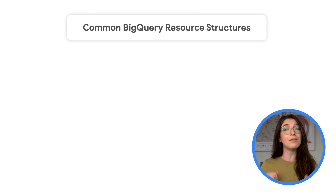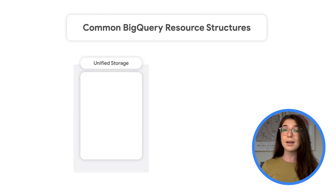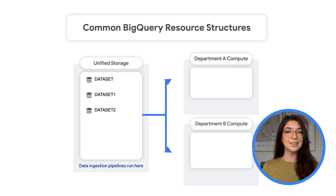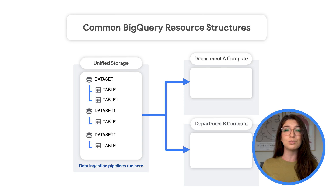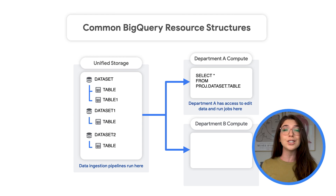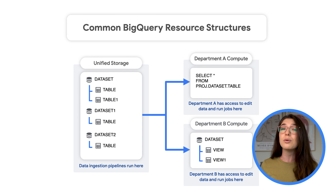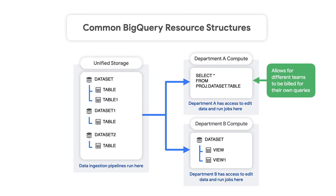Now that you understand the top-level containers of the BigQuery resource model, let's talk about some common ways users structure their deployments. Some BigQuery architects choose to create a common storage project that is queried in other compute projects. A centralized data platform team can also create pipelines in this storage project to ingest data from different sources — you can think of this storage project as a data lake. Then each department can have their own project for querying the data, saving results, and creating aggregate views. You can think of these projects as data marts. This structure is especially useful when departments want to be individually billed for their queries, or if queries need to be run in separate projects to avoid per-project limitations.